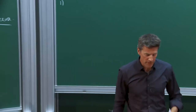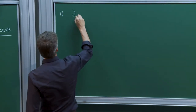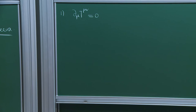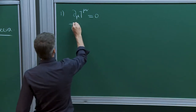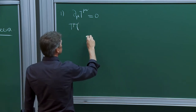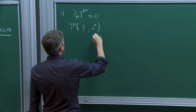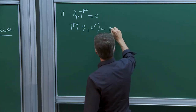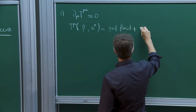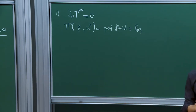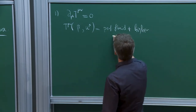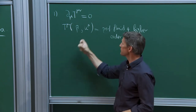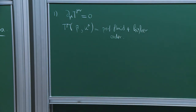So first, fluids. Normally we describe fluids in terms of a conserved current. The standard equation in the simplest case is the conservation of the energy-momentum tensor. If you parameterize the energy-momentum tensor in terms of the inverse temperature and some unit velocity field, and write this as a perfect fluid plus higher-order terms — where higher order means derivatives of these fundamental objects — you plug that in and get a closed system of equations for the velocity field and the temperature. That's the standard approach to hydrodynamics.